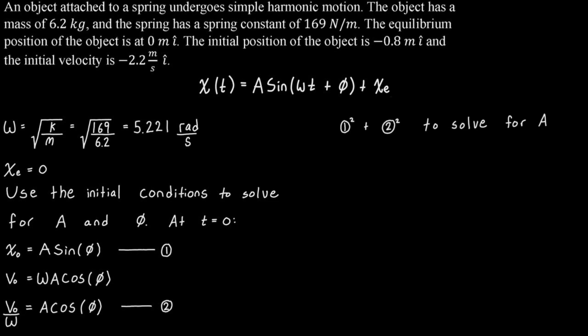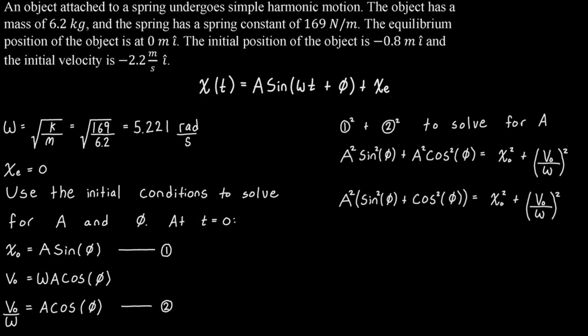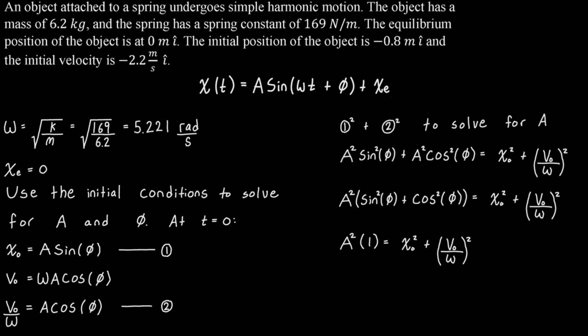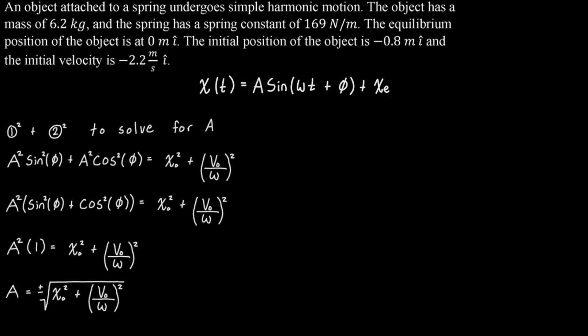To solve for the amplitude, we take equation 1, square it, and add it to equation 2 squared. The key is that sine squared plus cosine squared equals 1. So we get A squared sine squared plus A squared cosine squared equals x₀ squared plus (v₀/ω) squared. We factor out A squared, replace sine squared plus cosine squared with 1, then take the square root of both sides to get that the amplitude equals plus or minus the square root of x₀ squared plus (v₀/ω) squared. We'll leave the plus or minus for now and deal with it when we solve for the phase shift.